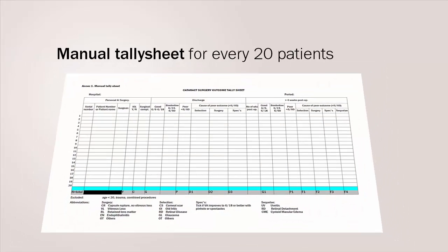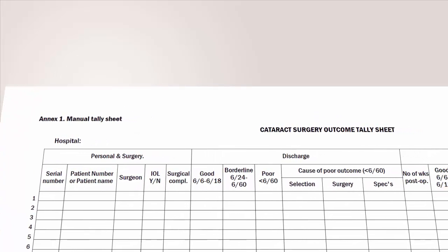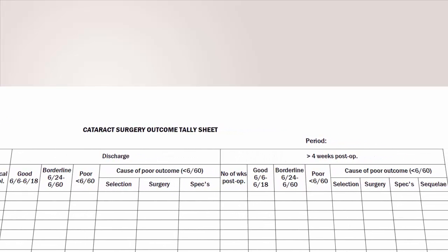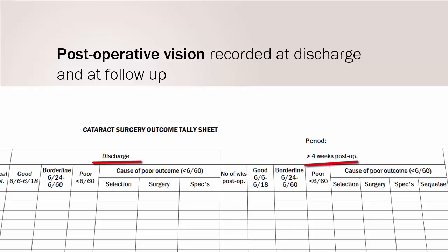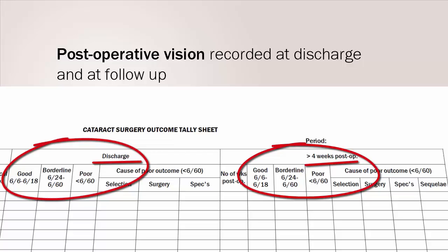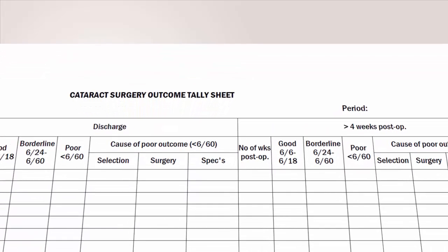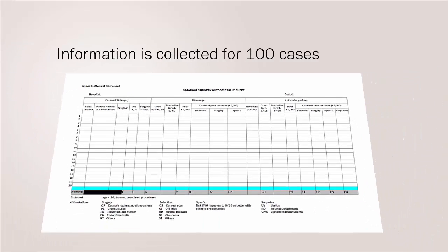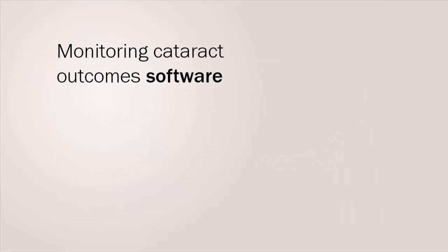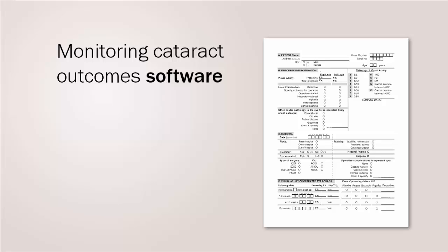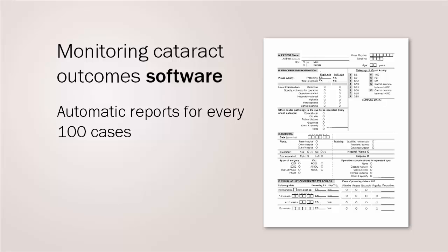Monitoring can be implemented manually in low resource settings using a relatively simple tally sheet to record information at two stages on every 20 patients operated for cataract surgery. Information is noted on each surgery including any problems, IOL implantation, and surgeon. Postoperative vision is recorded at discharge and then again during follow-up at 4–6 weeks and classified into good, borderline, or poor. If the outcome is poor, the reason is given: selection, surgery, or spectacles. Information is collected for 100 cases and then a report is prepared for the team to assess. Management should identify and train a nurse or clerk on how to enter and analyse all the data. In settings with computers, there is software available with a similar data entry form, and reports can be generated automatically for every 100 cases and be made available graphically. The software is free to download from the internet.